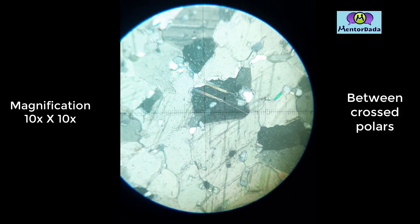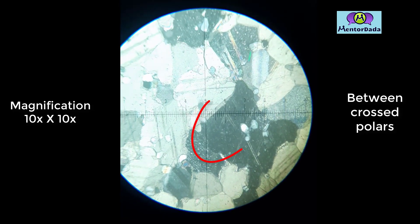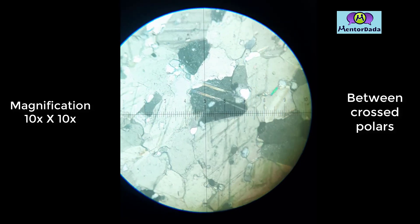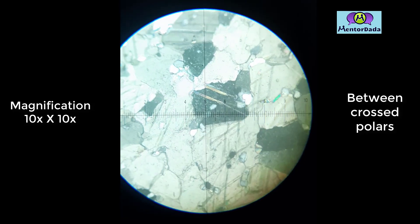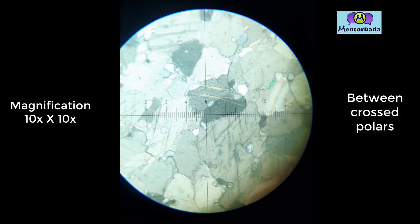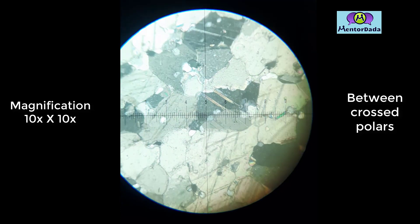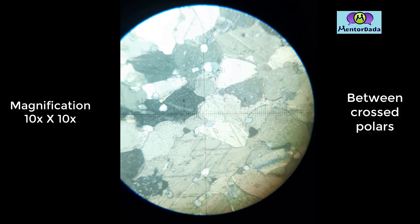When we rotate some degrees of the stage, the mineral goes to extinction, so we can say the mineral has inclined extinction. We can also see beautiful lamellar twinning in this mineral, which is very prominent.